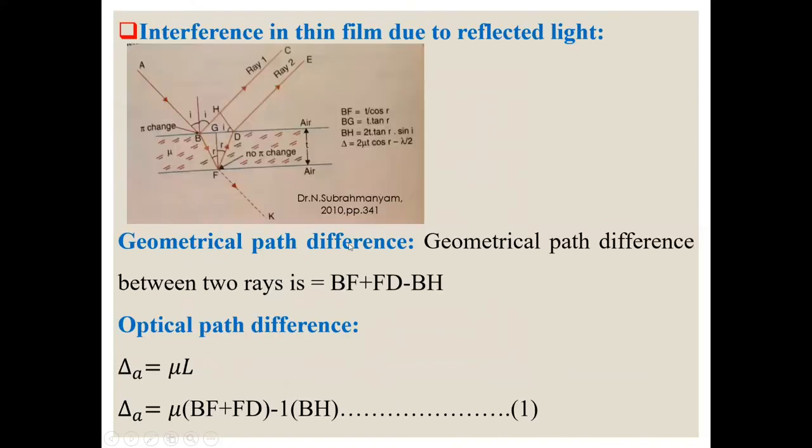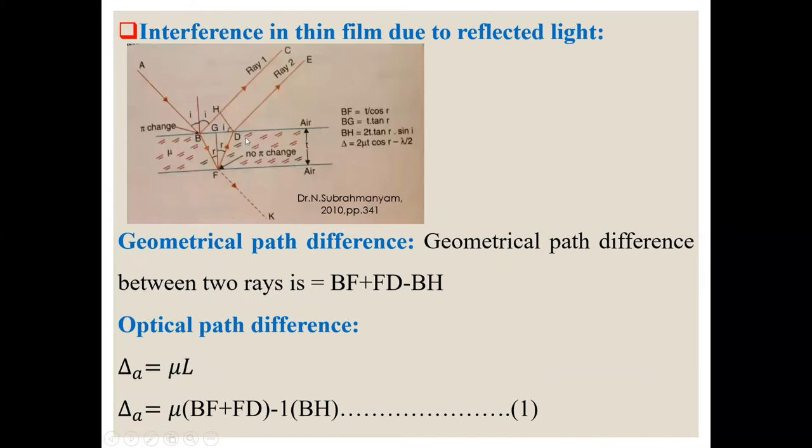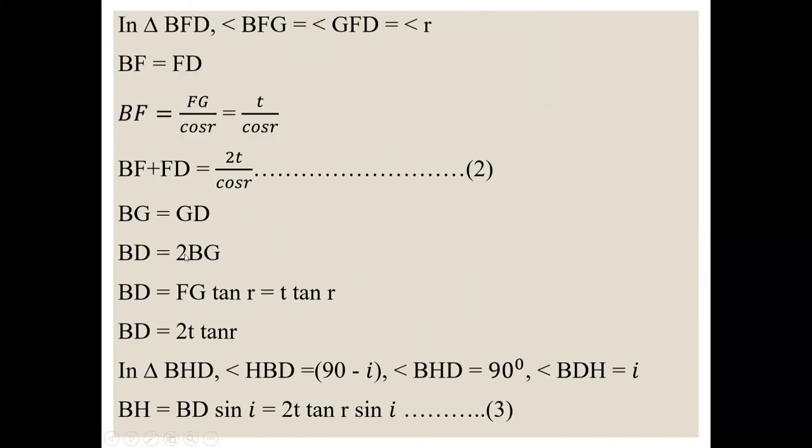BG is equal to GD. So BD is equal to 2BG. BD is equal to 2BG means FG tan r. So t tan r. BD is equal to 2t tan r.